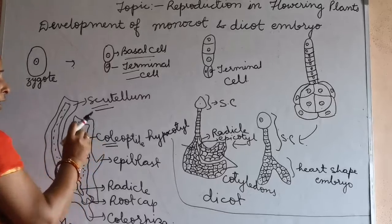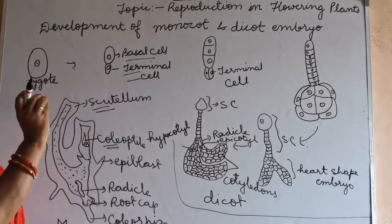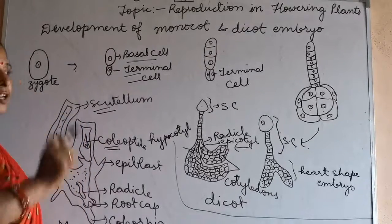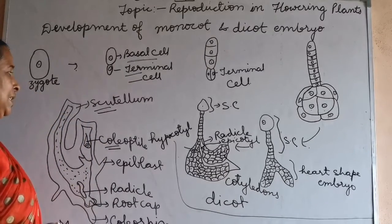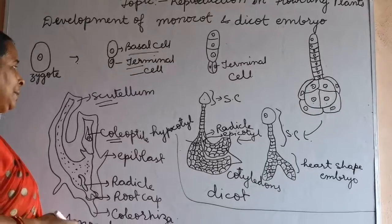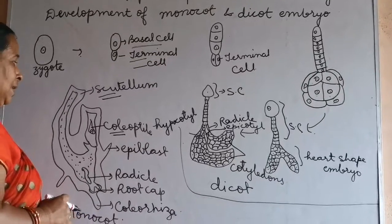The coleoptile is actually a leaf primordium — a small leaf primordium present inside the cell.